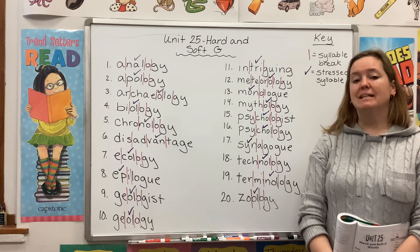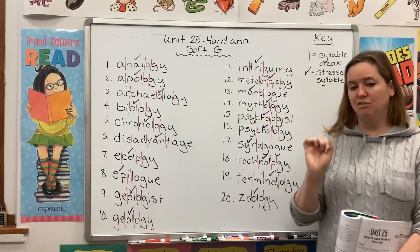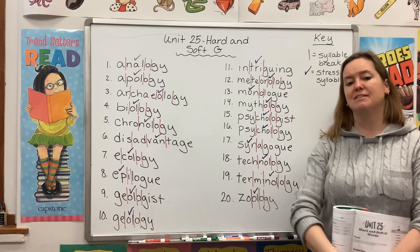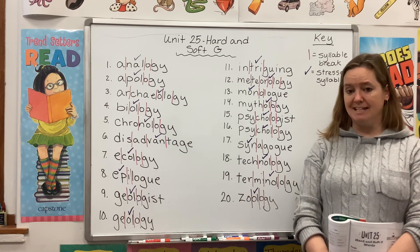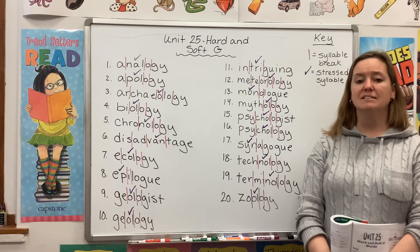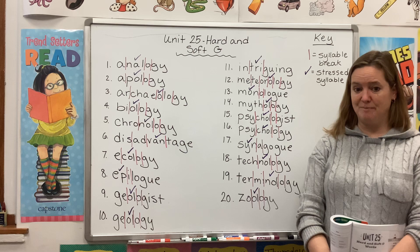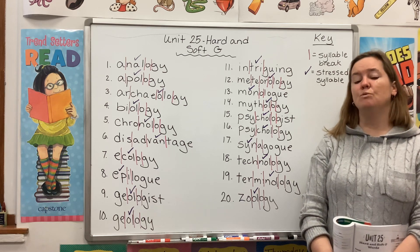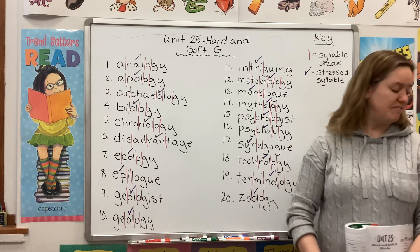So we have spent several weeks talking about derivational suffixes and we notice that a particular cluster of letters at the end of a word can change that word's part of speech. It can change a noun to a verb, a verb to an adjective, etc. Well, if you do a quick scan of this list, you'll notice that we have many different endings. Our focus this week is not derivational suffixes, although we will talk about a few of them. Our main focus this week is hard G and soft G. So as we read this list together, pay attention to those G's and notice if they're making a hard G sound or a soft J sound. Let's read our list. Repeat after me.